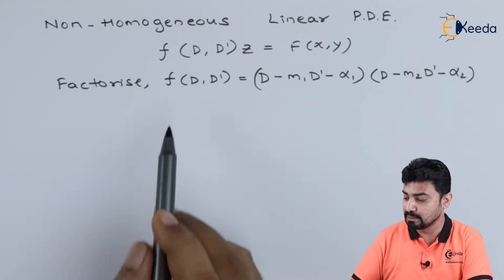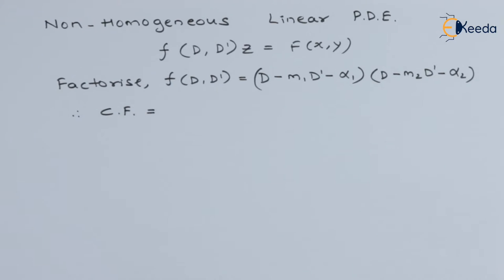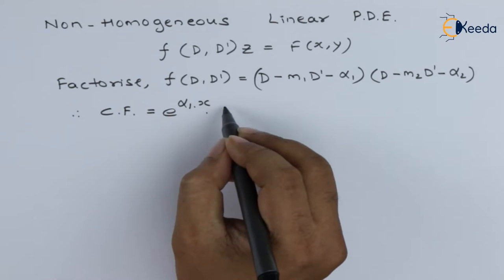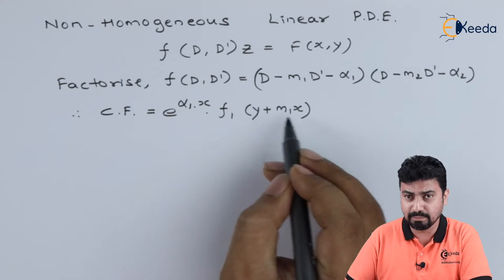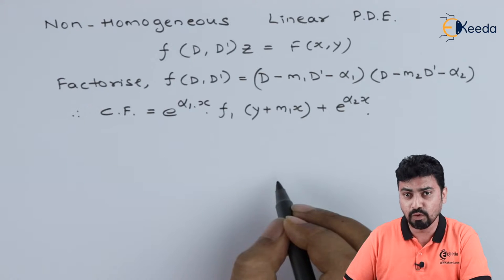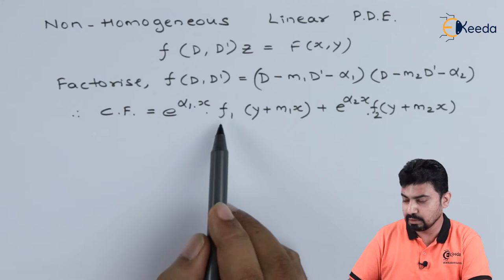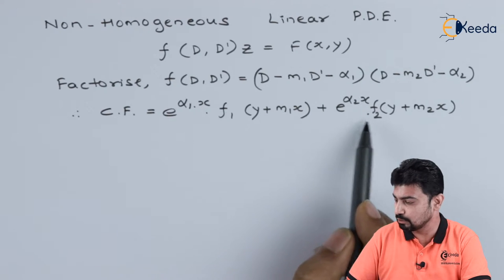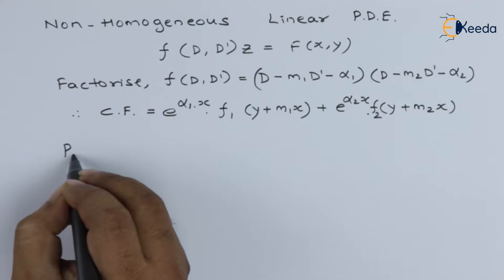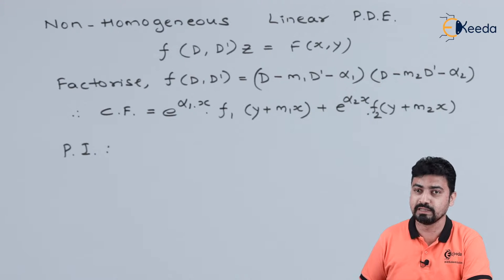For finding the complementary function, we first factorize and get the complementary function in the format: e raised to α₁x into f₁(y + m₁x), plus e raised to α₂x into f₂(y + m₂x). This will be the complementary function. For the particular integral, the method is the same as that applied for homogeneous linear partial differential equations.